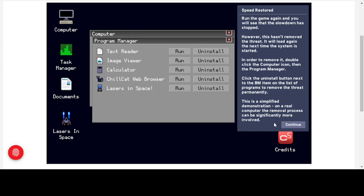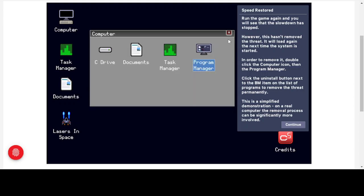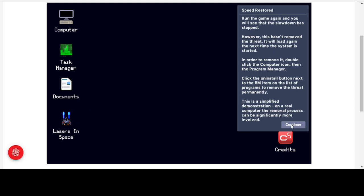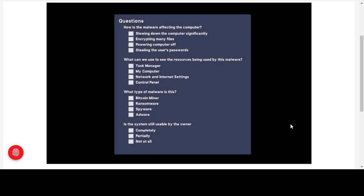This is a simplified demonstration — on a real computer the removal process can be significantly more involved and might require an anti-malware solution. Quiz questions: How is the malware affecting the computer? It's slowing it down significantly. What can we use to see the resources being used? The Task Manager. What type of malware is this? A bitcoin miner — not a legitimate one, something installed on our computer without permission. Is the system still usable? Partially.